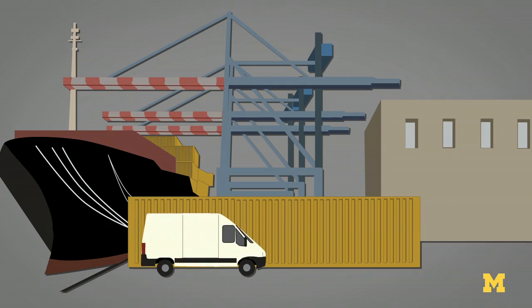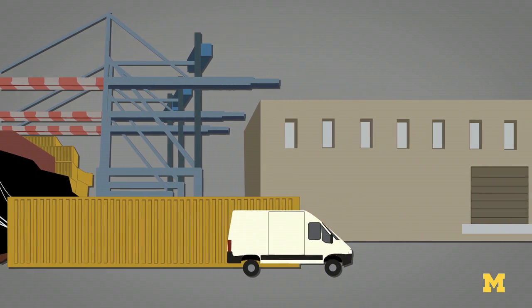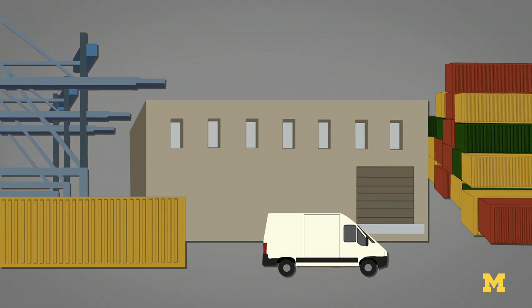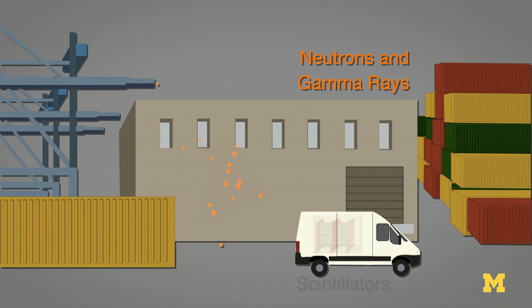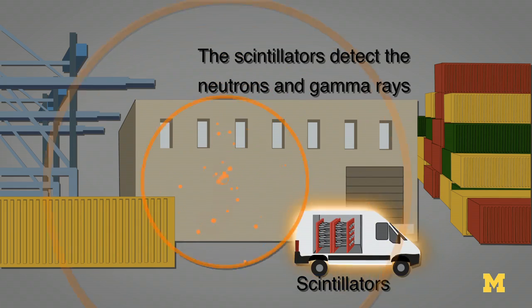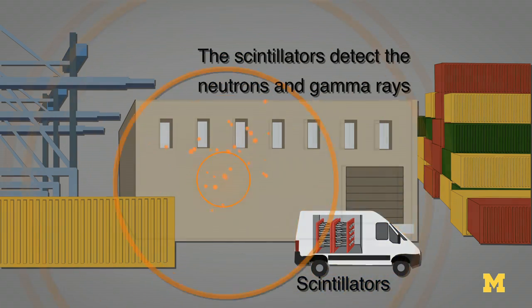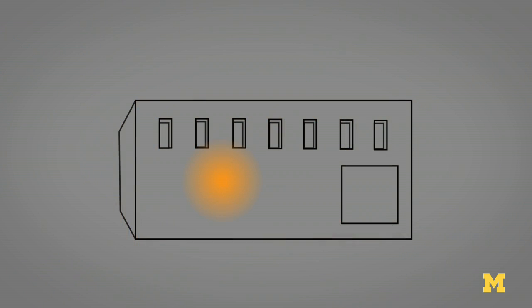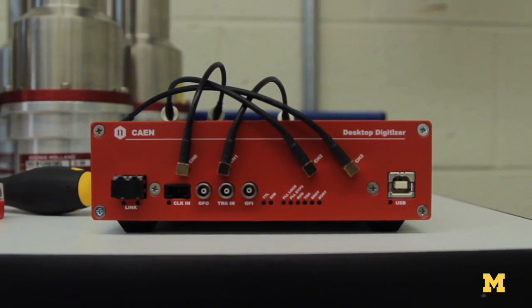In some cases you want to determine where nuclear material is located, say within a building. So we're developing an imaging system that can image fast neutrons and gamma rays and tell us where the material is located. We want to make sure that we can monitor the flow of any of these nuclear materials.